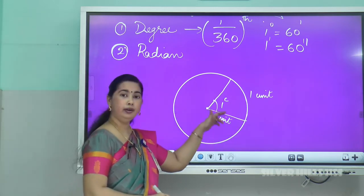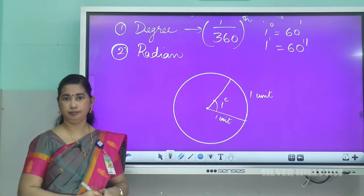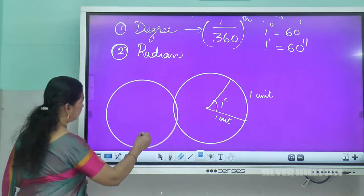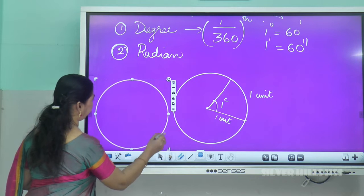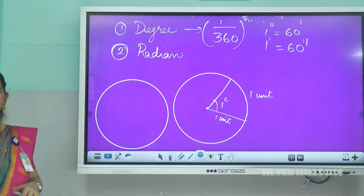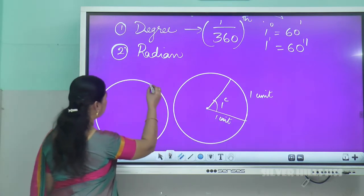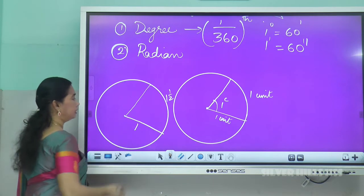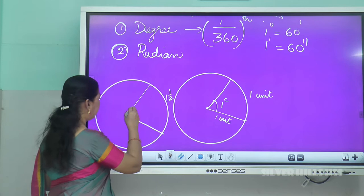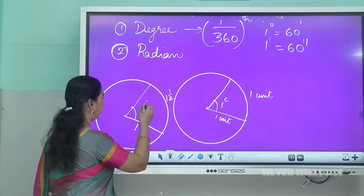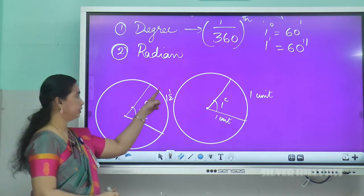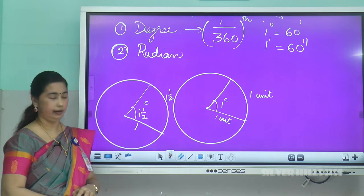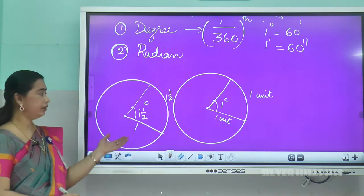What about one and a half radian? In a unit circle, the angle subtended by an arc of one and a half units at the center is one and a half radian. So the arc length is one and a half units in a unit circle, and the angle subtended is one and a half radian. In the same way, we can find other radian values.